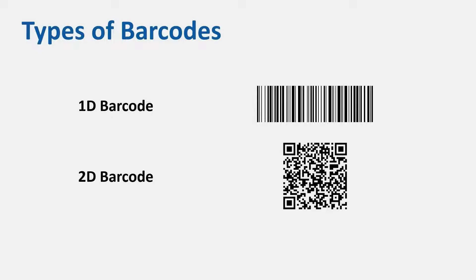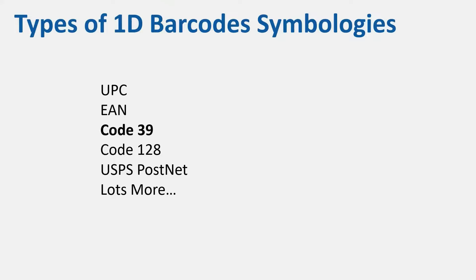We are going to focus on 1D barcodes because they are relatively simple to create in your applications. We can create 2D barcodes as well, but that would require a little programming, so we'll keep that aside. 1D barcodes have different symbologies — UPC, EAN, Code 39, Code 128, USPS Postnet, and many more.